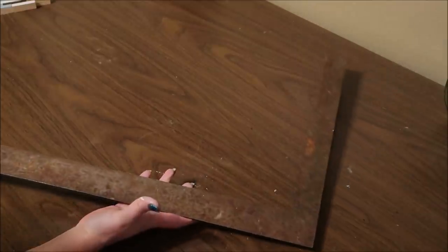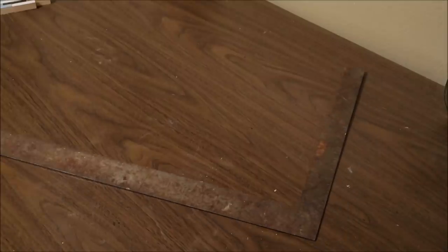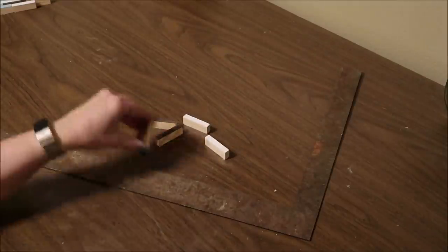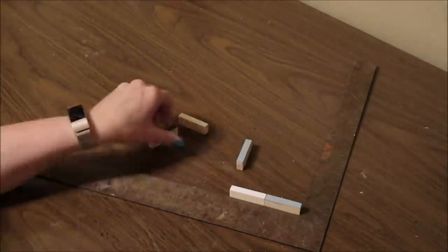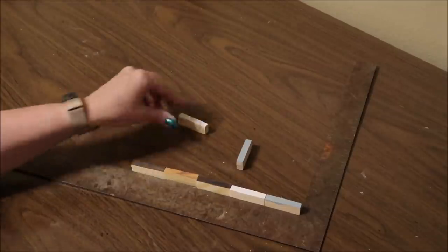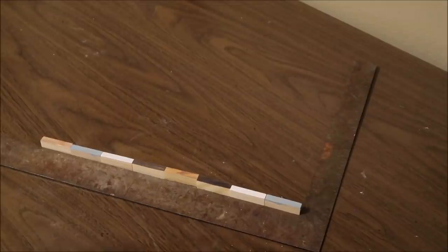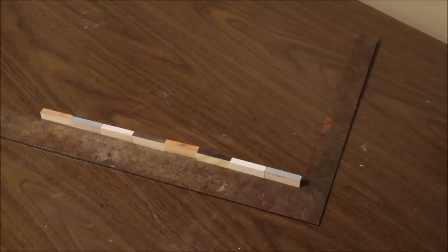For this next step, you'll want to have some type of straight edge. I'm using this old carpenter square. You can use a yardstick or just anything, some type of long straight edge so that you can line your blocks up. And you'll be using for each row, two blocks of each color. And then just line them up in random order.